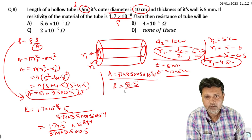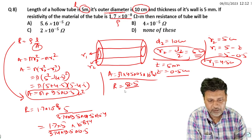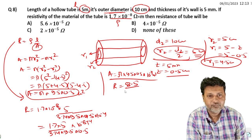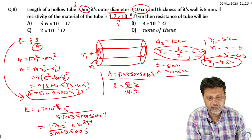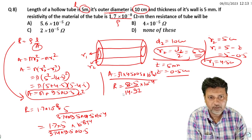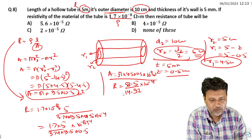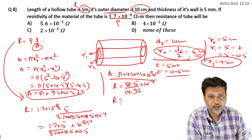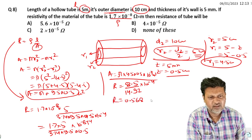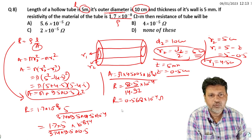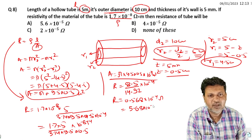This becomes 0.5683 times 10 to the power minus 4, which equals 5.68 times 10 to the power minus 5 ohms. That's the answer. Let's see the next question.